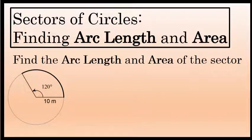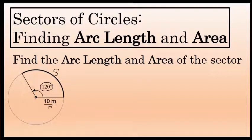Let's talk about the process of finding the arc length and area of a sector of a circle. A sector of a circle is a fraction of a circle — it's part of a circle. It's centered at the center of the circle and has a radius, which is the distance from the center of the circle to the edge of the circle, a central angle (in this case 120 degrees), and an arc length, which is the curved distance from one side of the sector to the other.